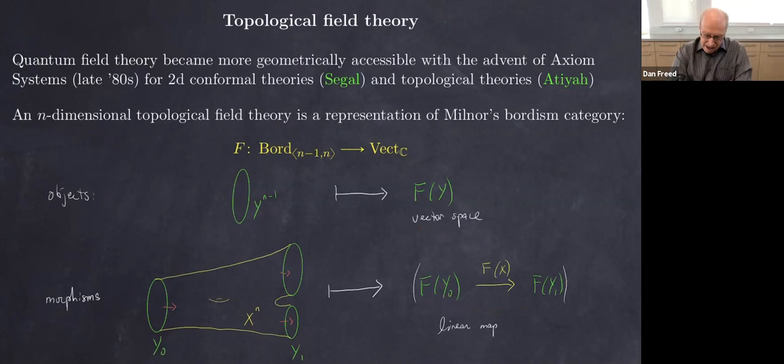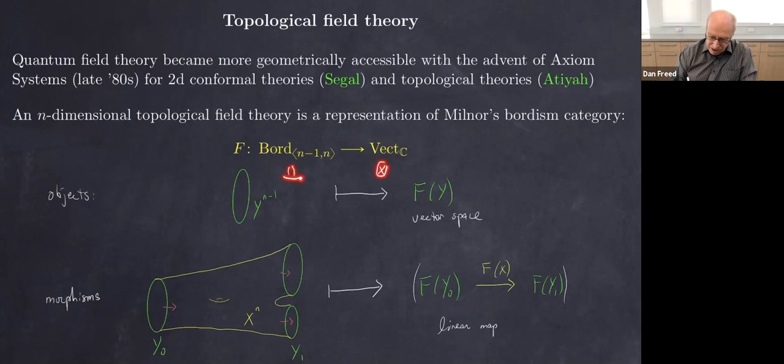Those bordism groups are groups because of the operation of disjoint union; here we also have disjoint union in this category, and vector spaces have tensor product as a composition law. This functor preserves those composition laws — it's the categorical analog of an abelian group and a homomorphism of abelian groups.